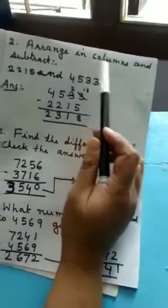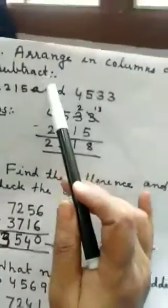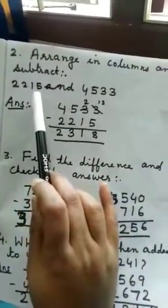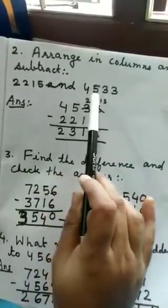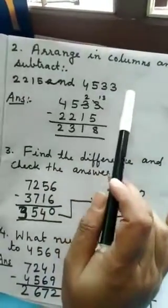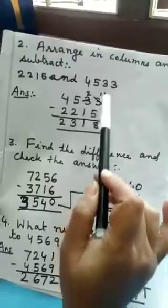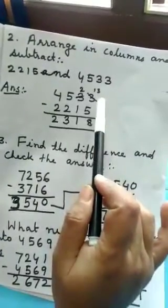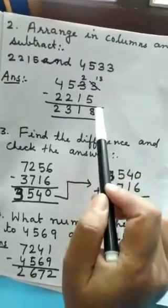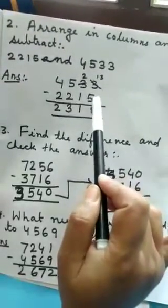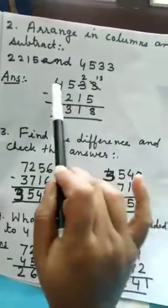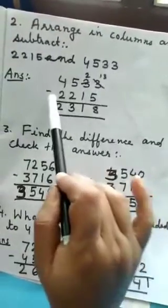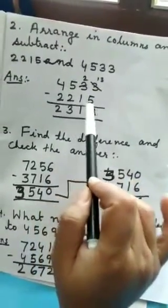Arrange in columns and subtract. 2,215 and 4,533. Listen children. This sum we will arrange in column. And the bigger number we will write on the top. And the smaller number we will write below. So, that is 4,533 minus 2,215.